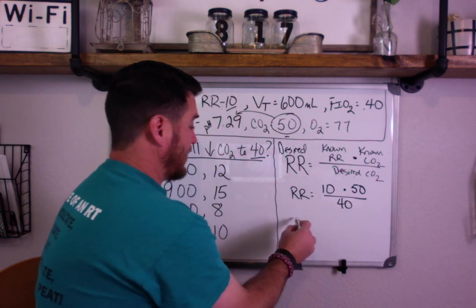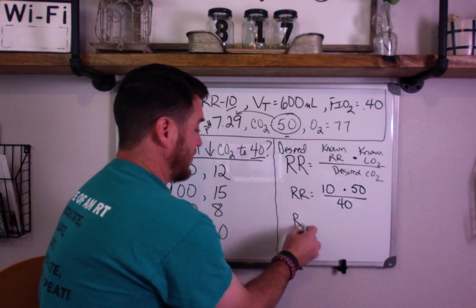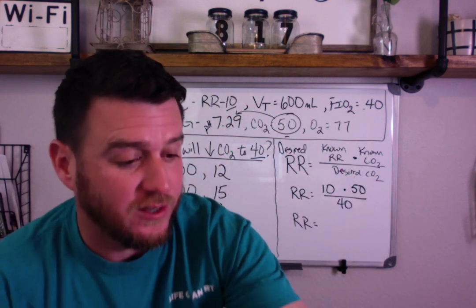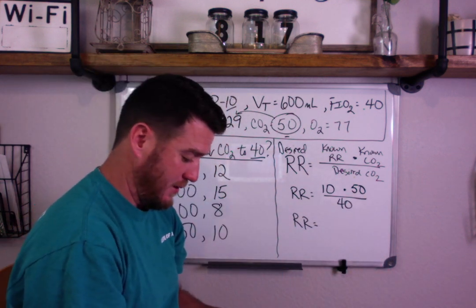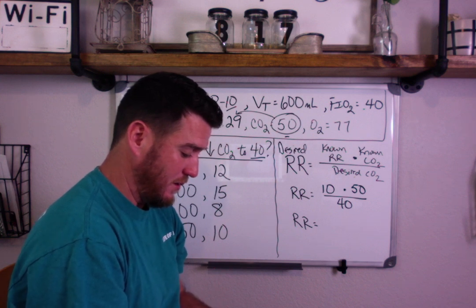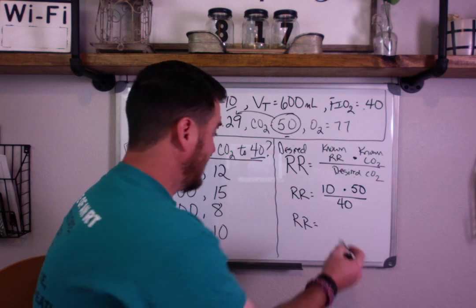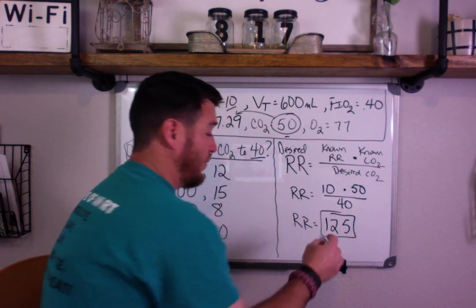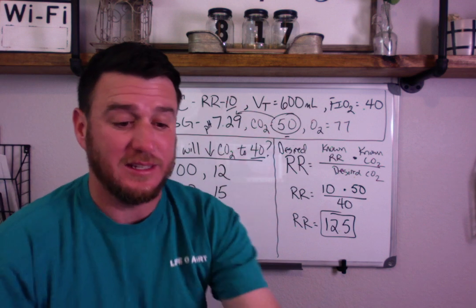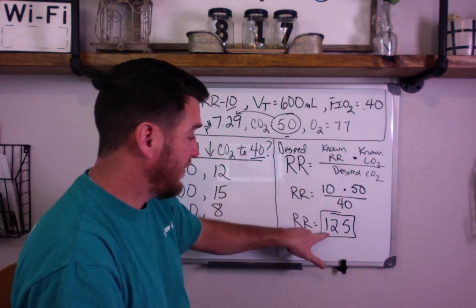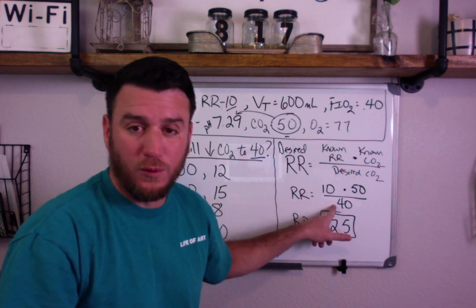When you do the math: 10 × 50 = 500, divided by 40 gives us a desired respiratory rate of 12.5. This means if we increase our respiratory rate from 10 to 12.5, we'd achieve a CO2 of 40 — assuming we keep the tidal volume at 600.